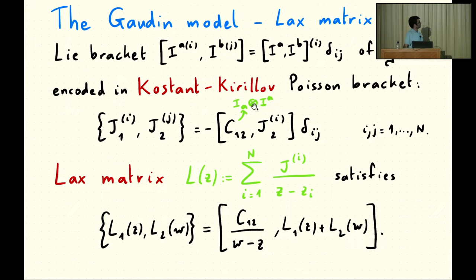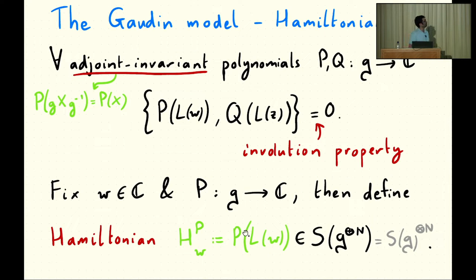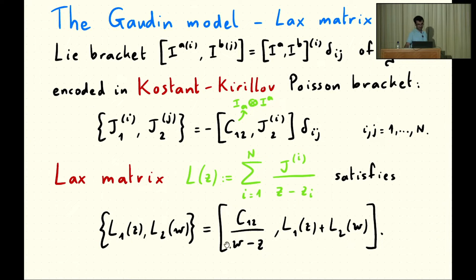Here C12 is just the tensor product of the dual basis elements of the Lie algebra, summing over repeated indices. The Lax matrix of the Gaudin model is given by this formal combination of these G-valued variables, and this bracket can be conveniently rewritten in the nice form of the Lax bracket for the Gaudin model — the one I mentioned on the first slide — where now the R matrix is this explicit R matrix.